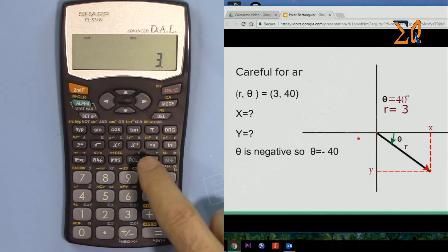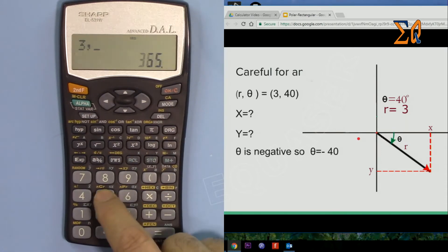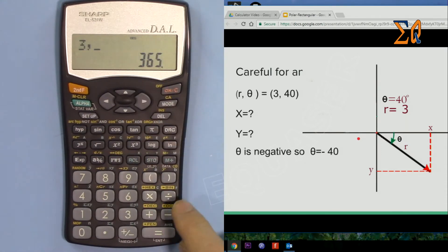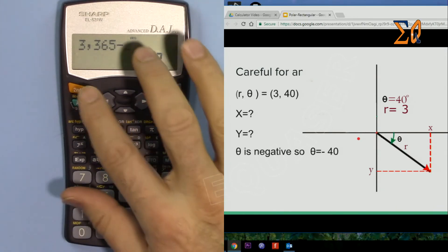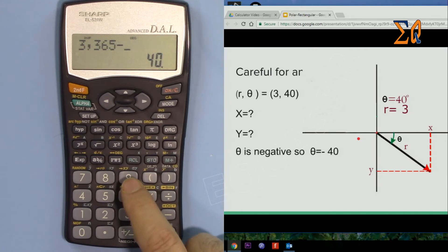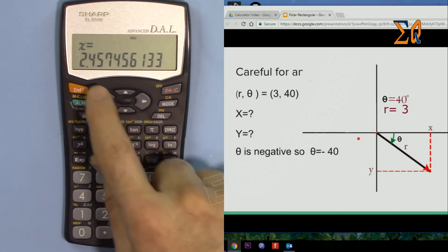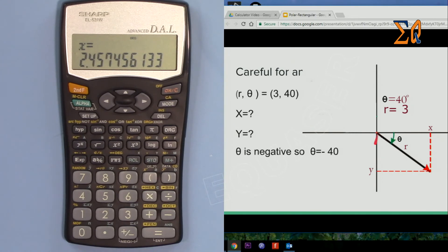So just second function and then X and Y, which is 9. So X is 2.4. Now we must get Y as a negative value. Second function EXP, minus 1.72.